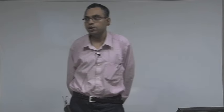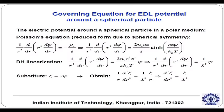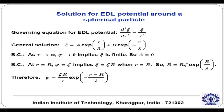In the previous lecture, we were discussing about the electrical double layer potential distribution around a spherical particle. To summarize our findings, we solved the Poisson-Boltzmann equation with Debye-Huckel linearization, and for that we made a substitution where a new variable was introduced as equal to r times psi, where psi is the ideal potential distribution. That gave rise to the general solution given in the last equation of this slide.